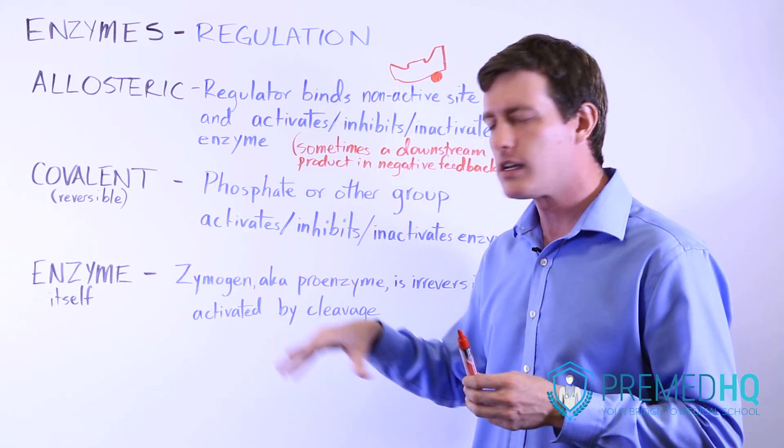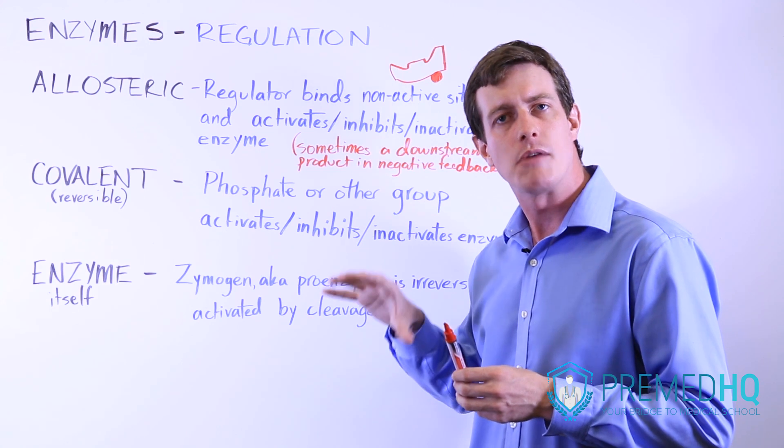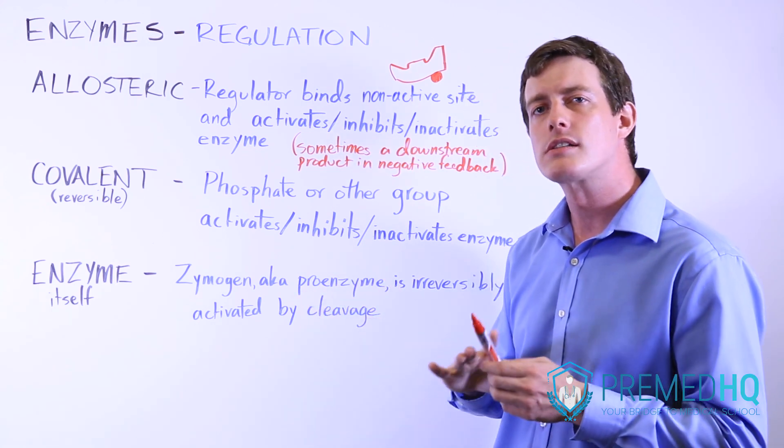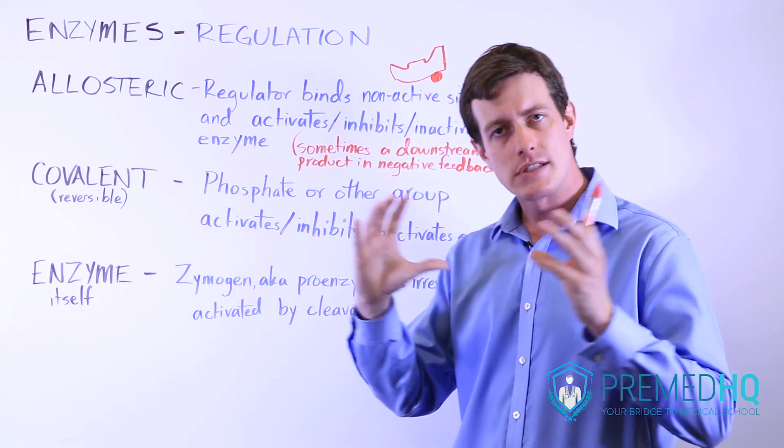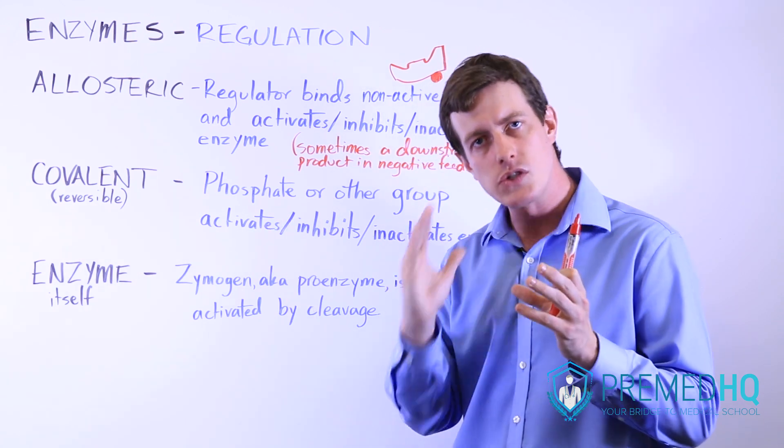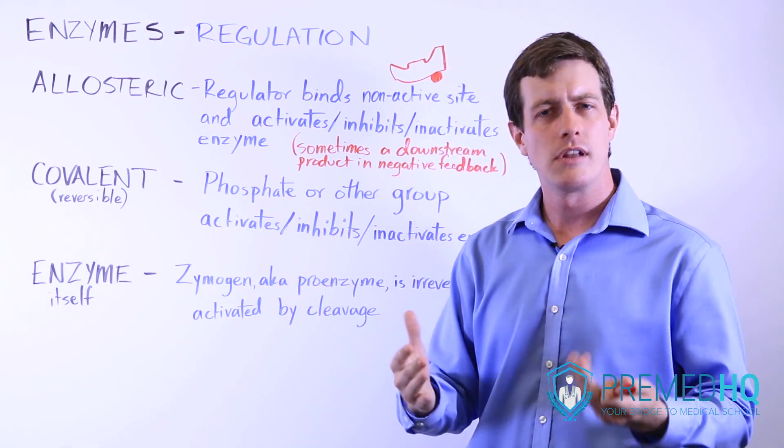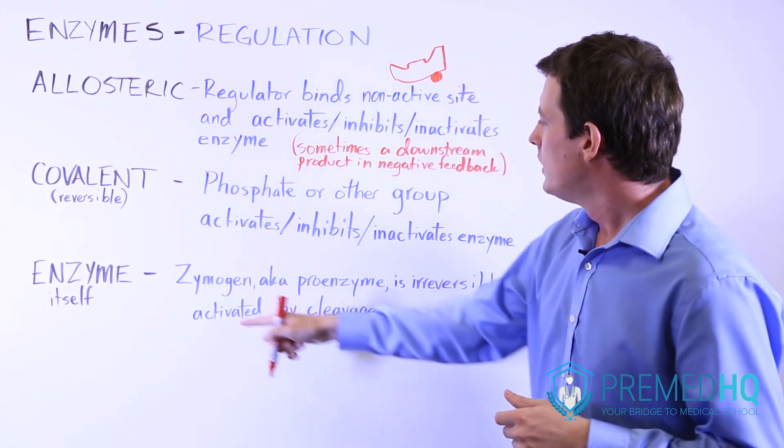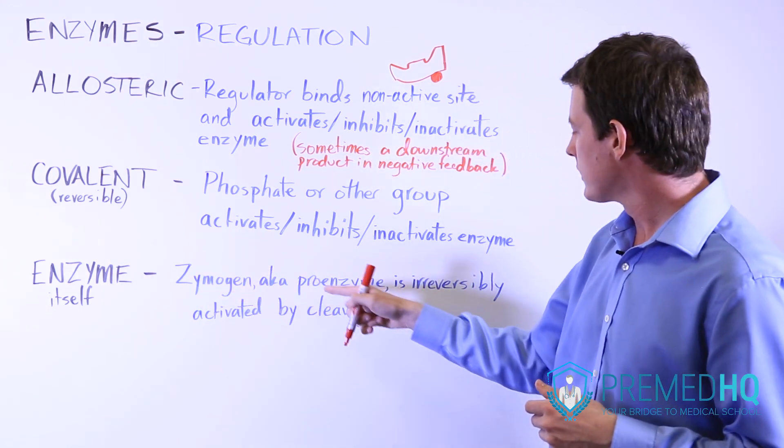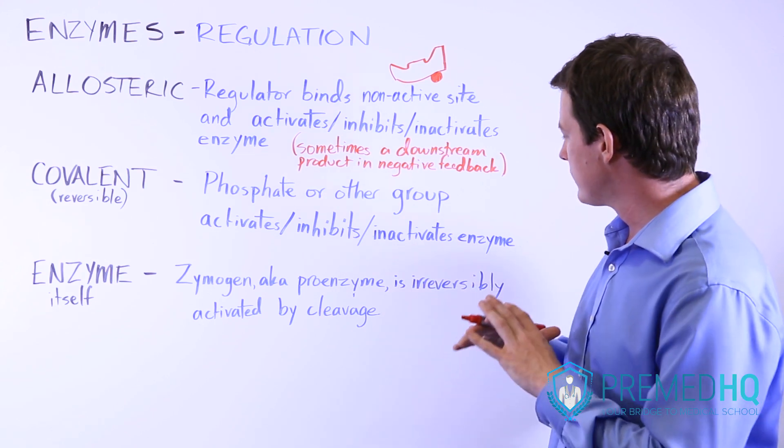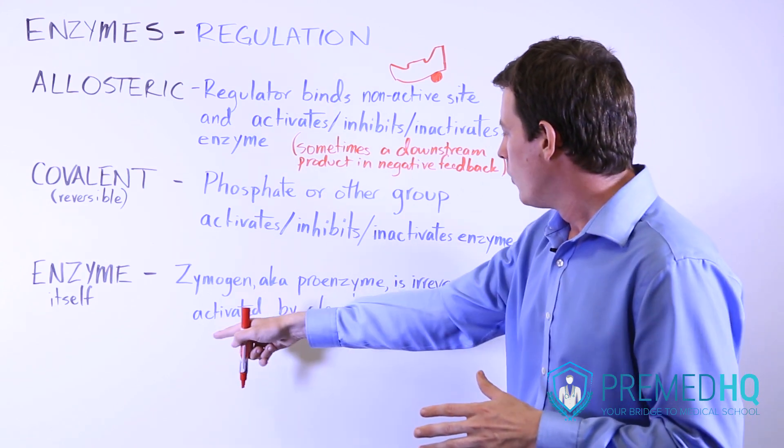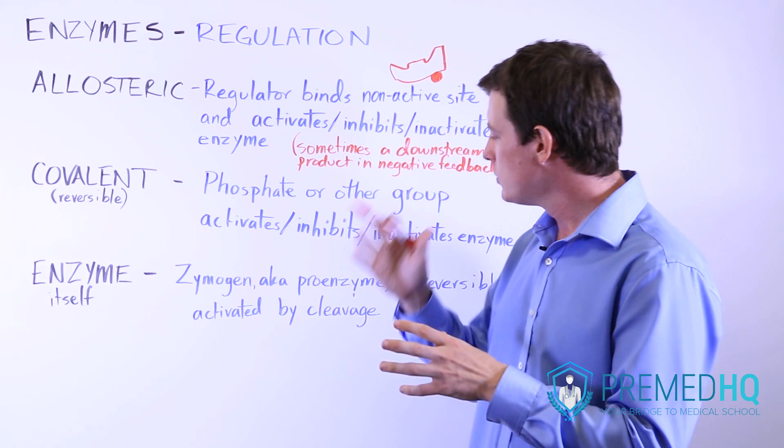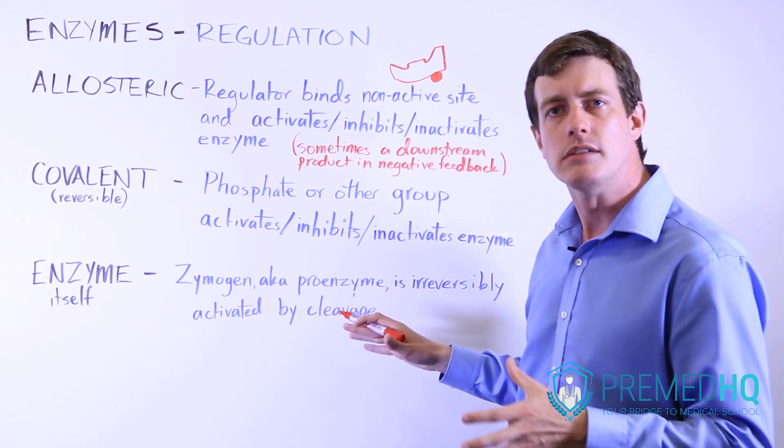if it encounters the HCl that makes this environment very acidic, that will cause the zymogen, the pepsinogen, to be cleaved. And as soon as it gets cleaved, then it turns into its active form of pepsin. And so a zymogen, which may also be known as a proenzyme, is something that is irreversibly activated when the molecule is cleaved. So it's activated by cleavage.